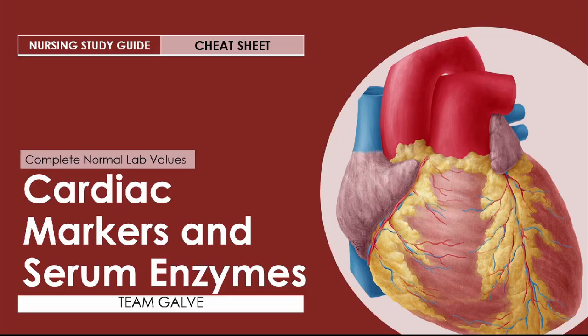Now, as I said, this is all about cardiac markers and serum enzymes. Let this be your complete normal lab values nursing study guide. Serum enzymes and cardiac markers are released into the circulation normally following a myocardial injury (MI), as seen in an acute myocardial infarction or other conditions such as heart failure.